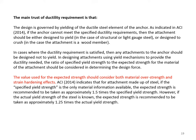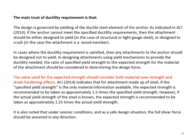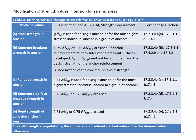ACI 2014 indicates that when designing attachments using yield mechanisms, the ratio of specified yield strength to expected strength for the attachment material should be considered in determining the design force, accounting for material overstrength and strain hardening. For steel attachments, if only the specified yield strength is known, the expected strength is taken as approximately 1.5 times the specified yield strength. If the actual yield strength is known, the expected strength is taken as approximately 1.25 times the actual yield strength. Under seismic conditions, the full shear force should be assumed in any direction.